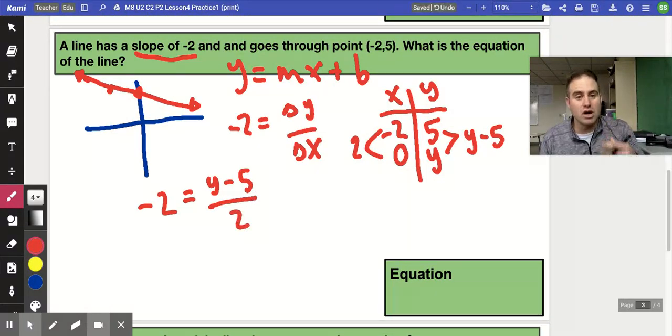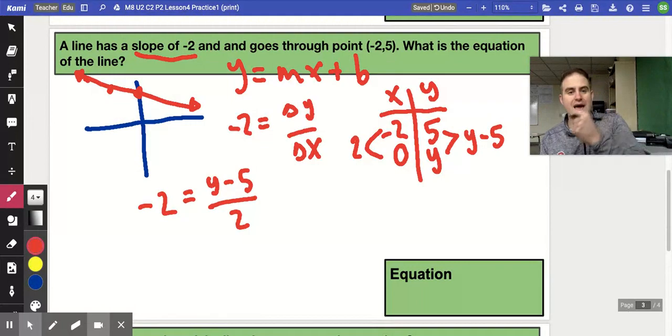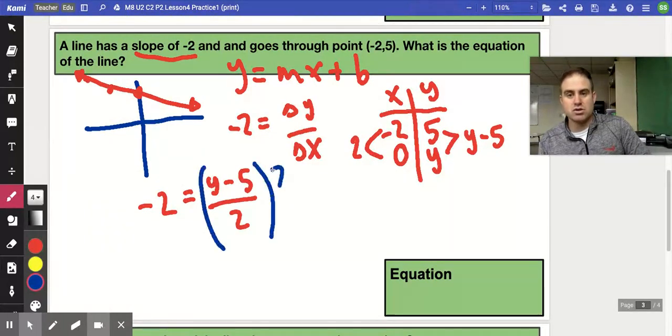And now we need to undo what's being done to y. y is being subtracted by 5 and divided by 2. So the reverse order of that would be, with inverse operations, multiply by 2, add 5. So those are the steps we're going to follow. We're going to take and multiply this whole fraction by 2 to rid it of the division.